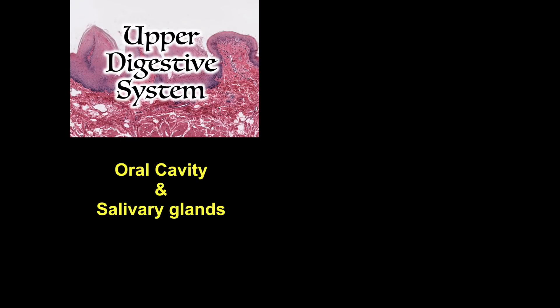During digestion, fats, proteins, and carbohydrates are broken down into small units that can be absorbed by the small intestine. The inner layer of the digestive tract is also a critical barrier between the outside of the body, or the contents of the lumen, and the body, and its structure reflects that function. Throughout this series, we'll discuss the structures within each part of the digestive tract that allow for specific functions.